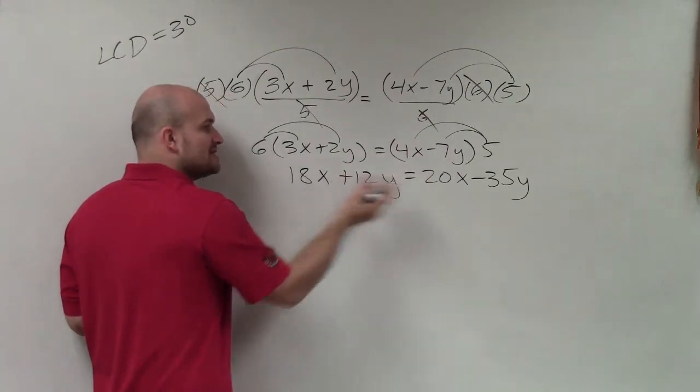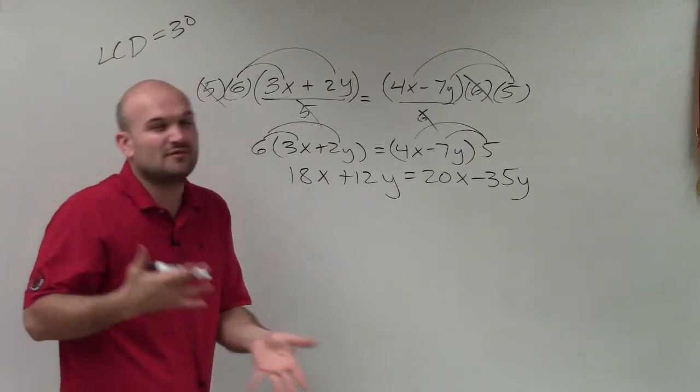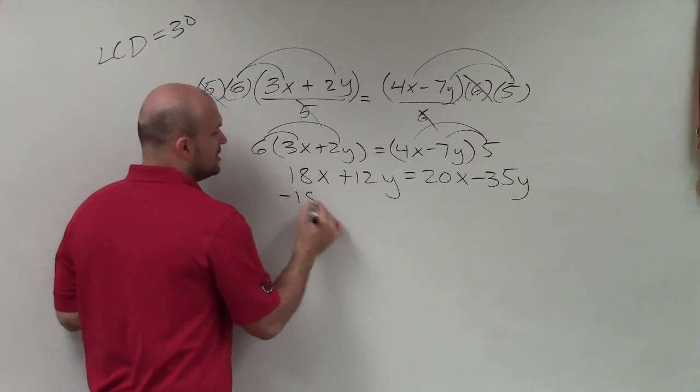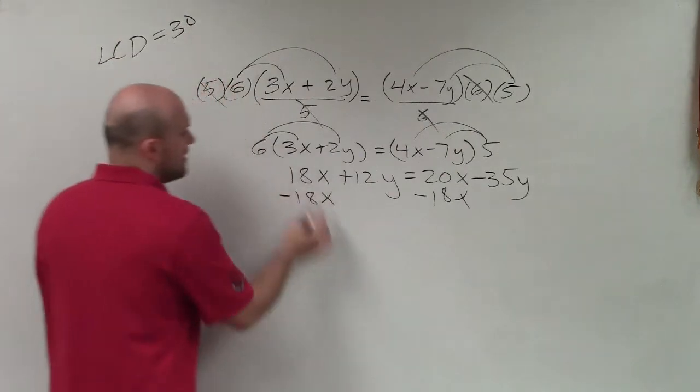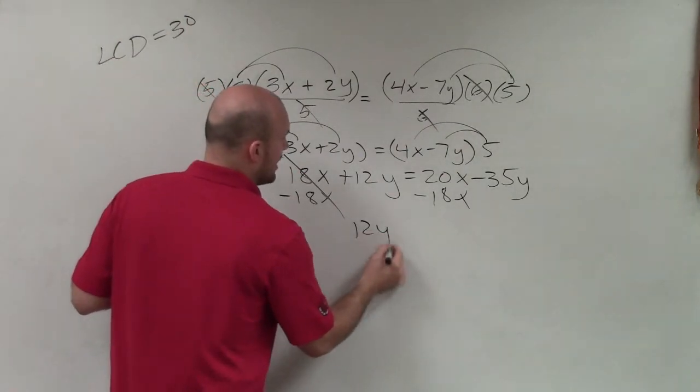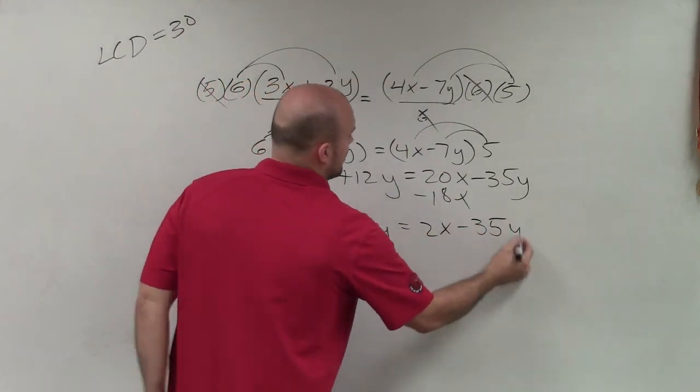If you subtract the 20 on both sides, your x will be over here, but then it's negative. So I don't like dealing with solving for negatives. I always like to solve for the positive, so I'm just going to solve for x on the right-hand side. To undo the 18x, I'm going to subtract 18x on both sides. That is going to subtract to 0. So I have 12y equals 20x minus 18x is 2x minus 35y.